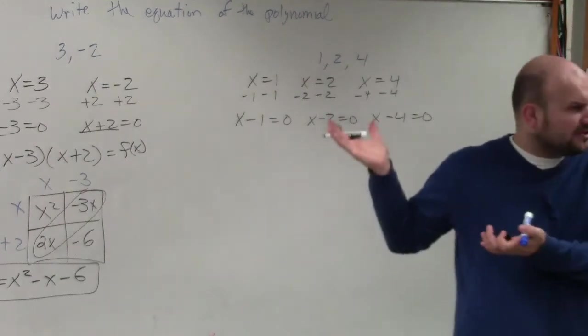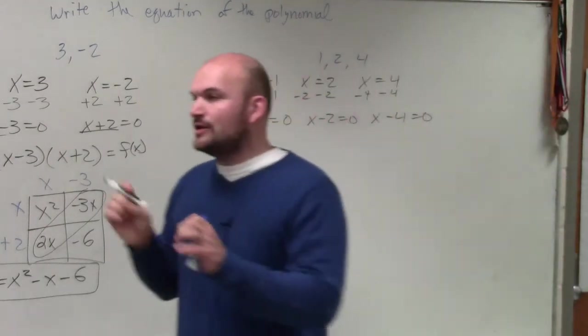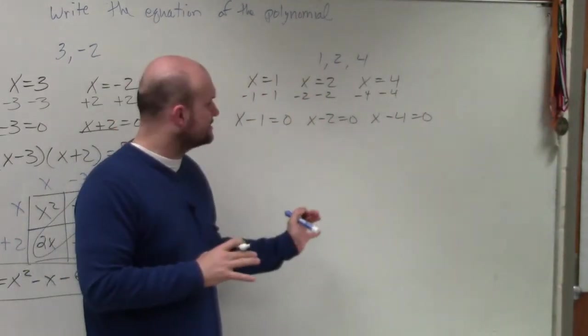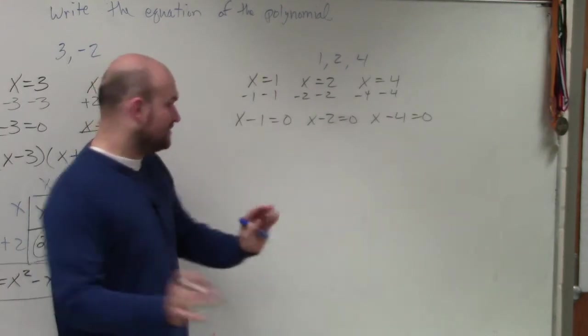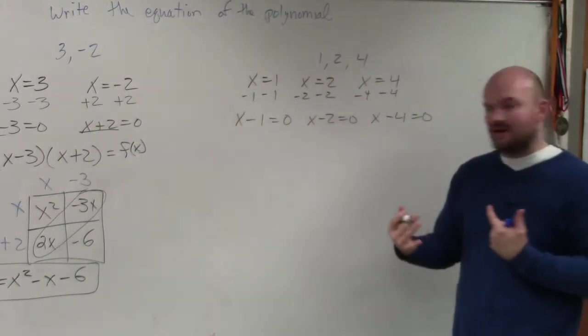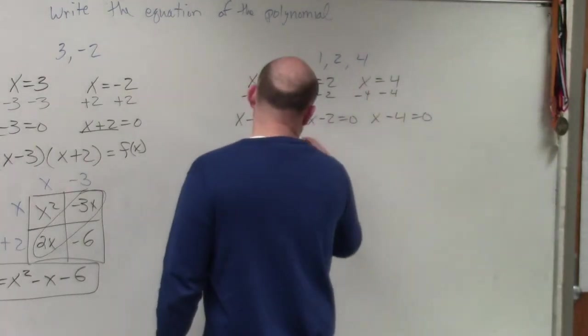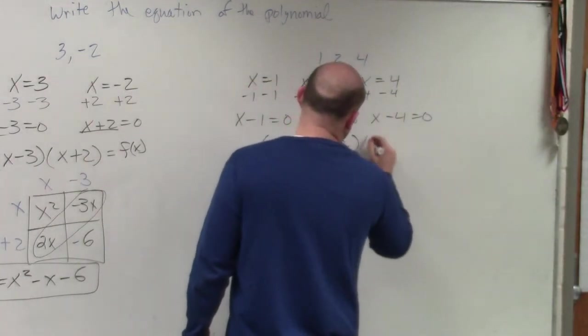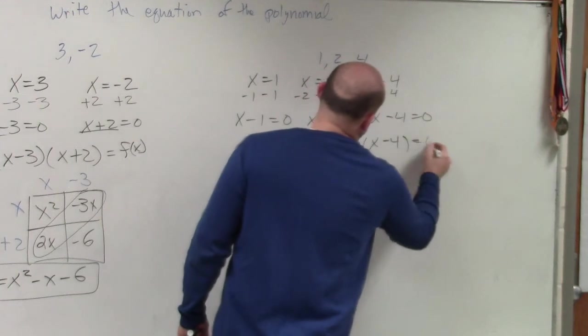But you guys can do all this, right? You can do all three of these like this. However, I don't want you to do the multiplying with all three yet. So what you guys should understand, though, is how we got to this was having these all multiplied to equal 0.